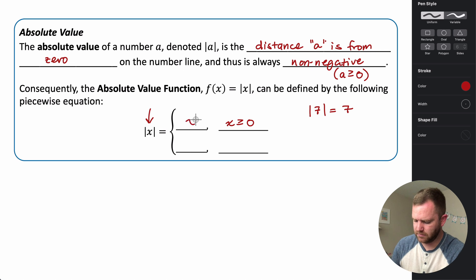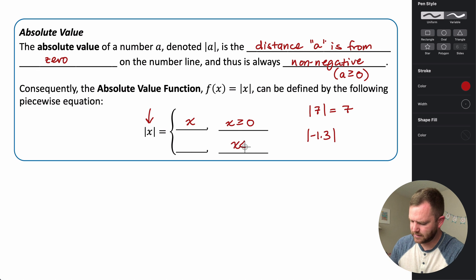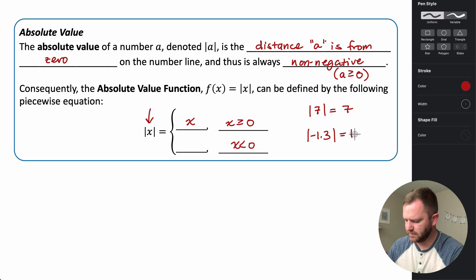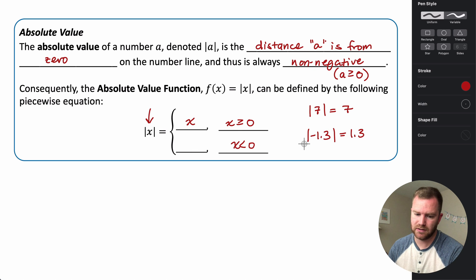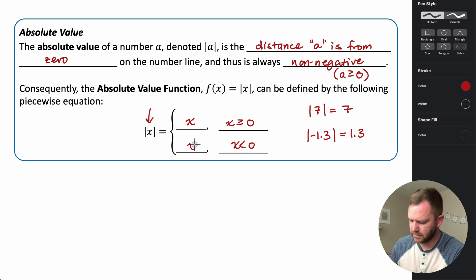For values of X greater than or equal to zero, the output is the same as the input. But for numbers less than zero, like negative 1.3, the absolute value of negative 1.3 is positive 1.3, since it is 1.3 units to the left of zero. So when a value is less than zero, we get out the opposite of the input.